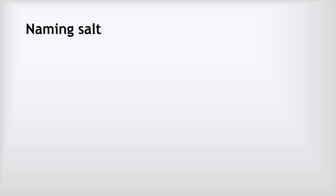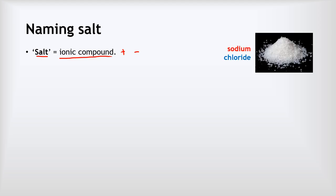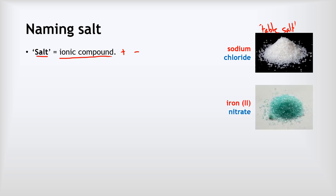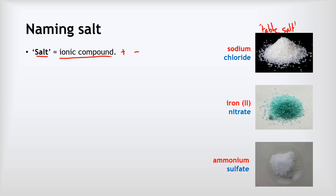Let's start by looking at how we name salts. The word 'salt' is just another word for an ionic compound — a compound made of positive ions and negative ions attracted together by electrostatic forces. Examples include sodium chloride, which is table salt, the one we use in cooking. Iron(II) nitrate is also a salt, but definitely not something you'd cook with. Same with ammonium sulphate.